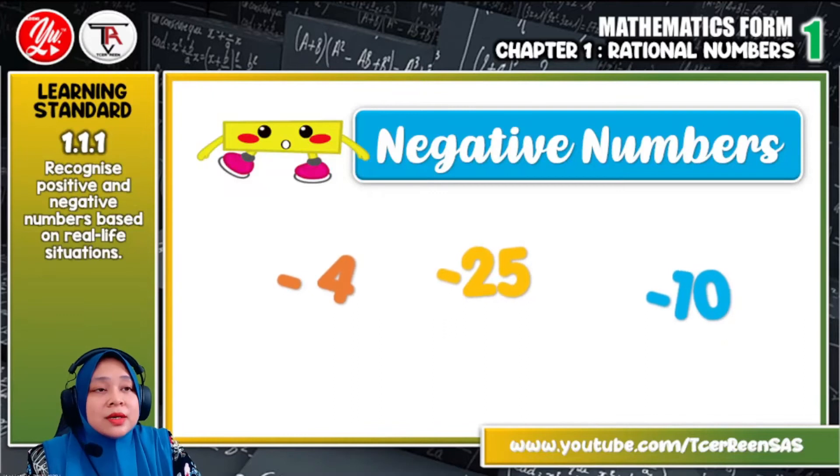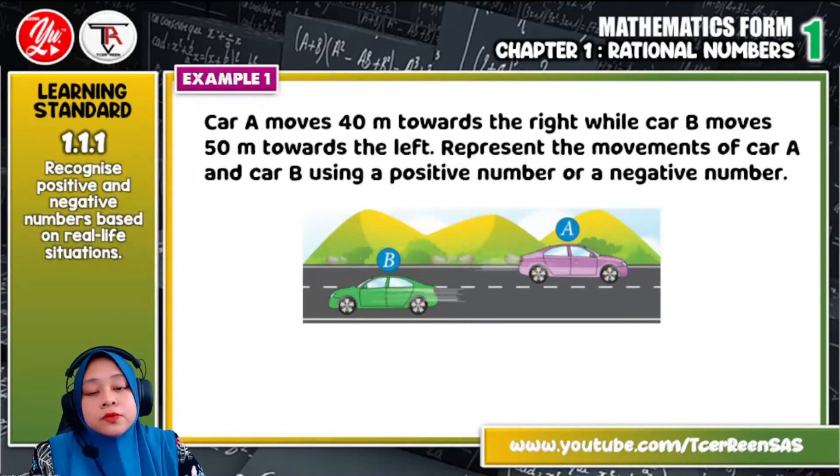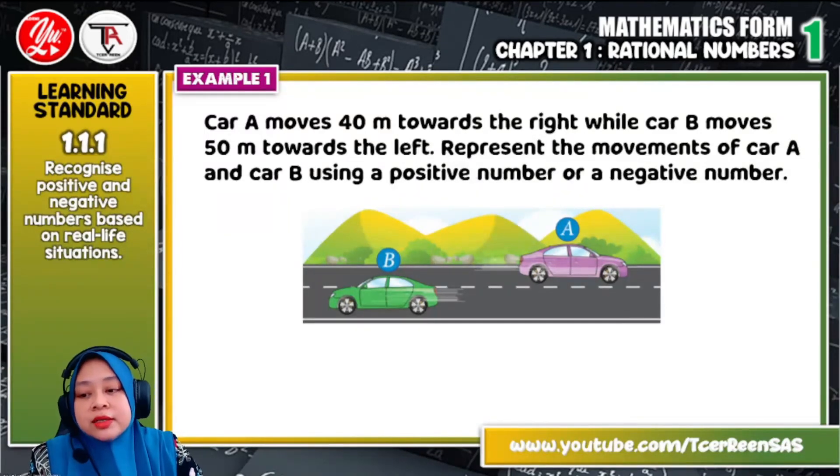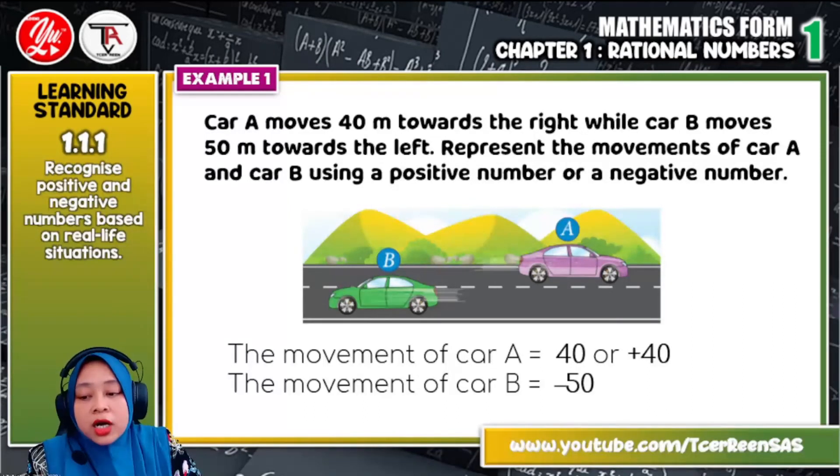Okay, let us see some example. Let us assume that moving towards the right is written by a positive number, and moving towards the left is represented by a negative number. So here, the movement of car A, which is moving towards the right, 40 meter towards the right, we write it as 40 or plus 40. While the movement of car B, which is moving towards the left, 50 meter, we write it as negative 50.